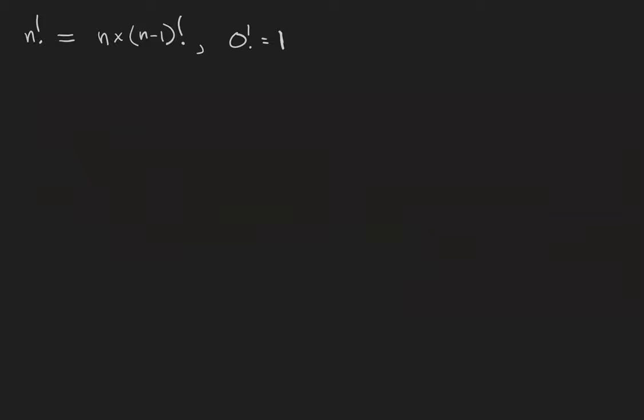That leads us to the recursive definition of the factorial. n factorial equals n times n minus 1 factorial, and again we stipulate that 0 factorial equals 1.